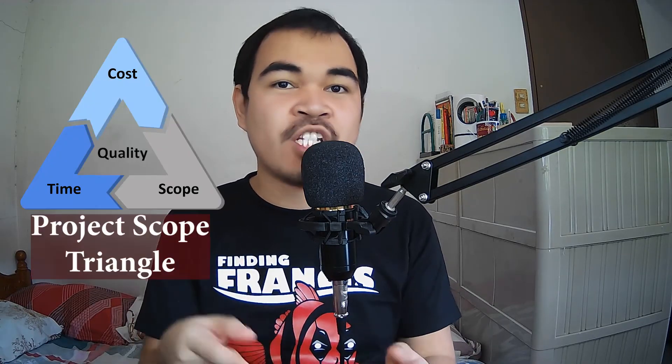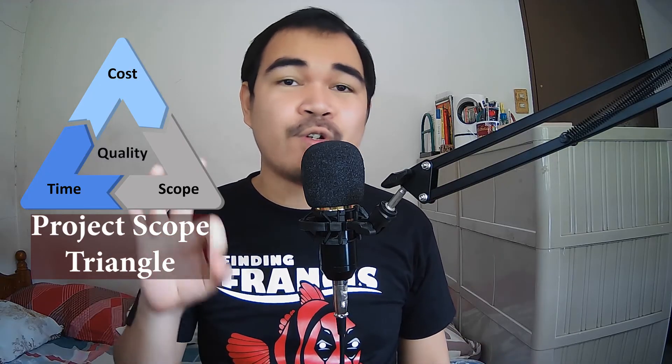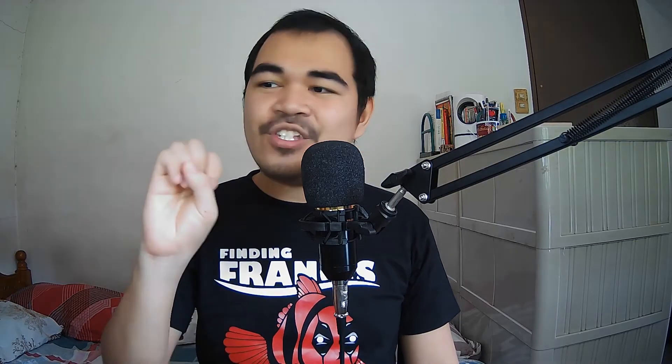Another tip sa pag-isip ng inyong project is yung isaalang-alang ninyo rin yung project scope triangle. Sa project scope triangle, pinapakilala rito yung tatlong constraint na nakapaloob sa isang project, which is yung time, cost, and scope. Those constraints make up the overall quality of your project, so you need to take into consideration each constraint. First thing na kailangan nyo alamin is i-identify ninyo kung alin doon sa tatlo yung fixed value. When you're under a capstone project, ang fixed data is yung time — kasi hindi mo naman pwedeng sabihin na extend-extend ng time lagi.